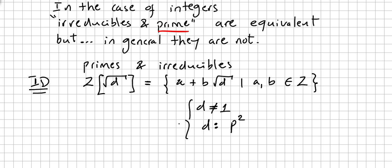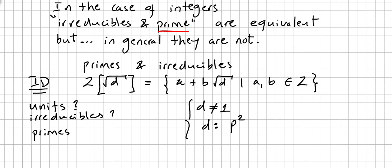When we get into more advanced number theory, we are going to see that these sorts of rings are very important. Now the question is: when I have an integral domain like this, how can I check what the units are, the irreducibles, and the primes — how can I see what they are if I am in an integral domain of this type?